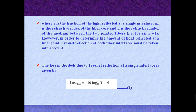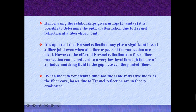In order to determine the amount of light reflected at the fiber joint, Fresnel reflection at both fiber interfaces must be taken into account. The loss in decibels due to Fresnel reflection at a single interface is given by: Loss = -10 log₁₀(1 - R). Using the relationships in equations 1 and 2, it is possible to determine the optical attenuation due to Fresnel reflection at a fiber-to-fiber joint. When index matching fluid with the same refractive index as the fiber core is used, losses due to Fresnel reflection are in theory eliminated.